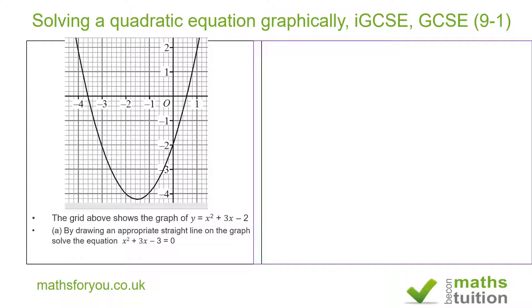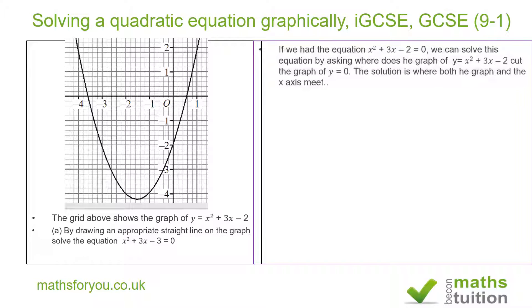Now if we start from x squared plus 3x minus 2 is equal to 0, suppose we want to solve this equation graphically. What we do is to plot the graph as shown here and then find out where the graph cuts the x axis because the x axis is the same as y is equal to 0. So find out where the graph cuts the x axis and that should be the solution to our equation. In this case about 0.6 and minus 3.6 as well.